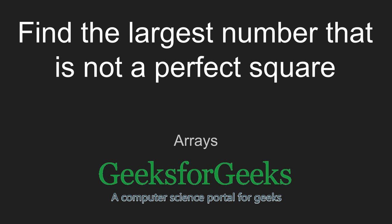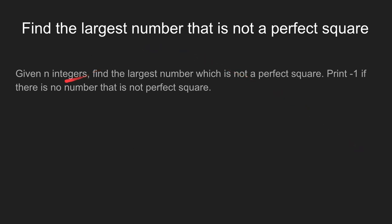Hi everyone, welcome to GeeksforGeeks. In this video, I will discuss a problem: how to find the largest number that is not a perfect square. Let's have a look at the problem statement. Given an array of integers, we have to find the largest number that is not a perfect square and print minus one if there is no such number.